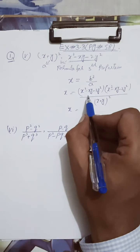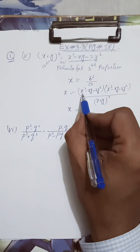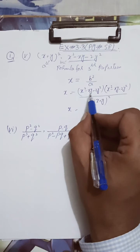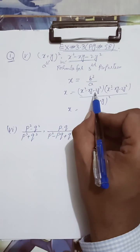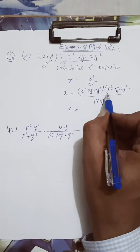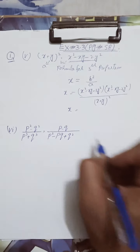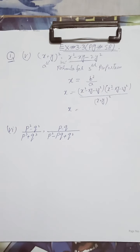For the factorization we use the mid-term break. I will write the value: x squared minus xy minus 2y squared — these two values.